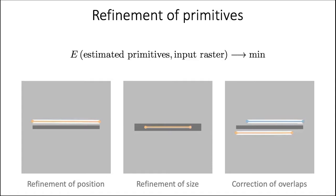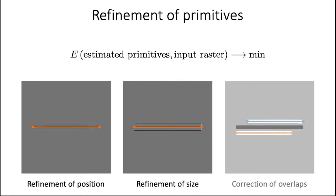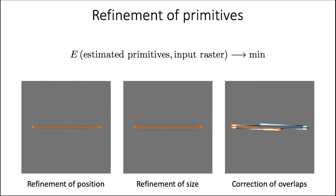In the paper, we explain how this step fixes various artifacts, such as incorrect placement of the primitives, incorrect size, or overlapping primitives.